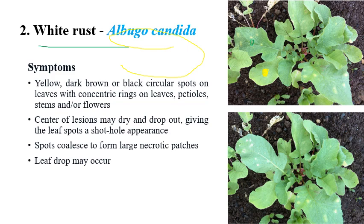In advanced stages of white rust, shot hole symptoms can also be observed in the same areas where the white spots appeared — similar to what we saw in Alternaria blight. Initially small spots coalesce, necrotic spots appear, and leaf dropping can also be observed.